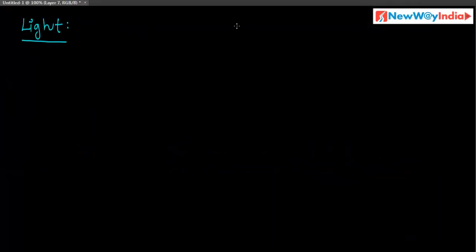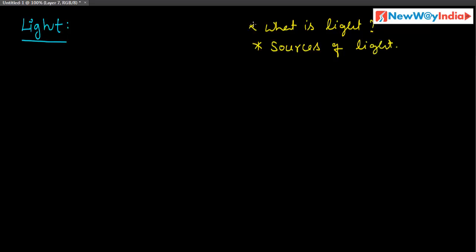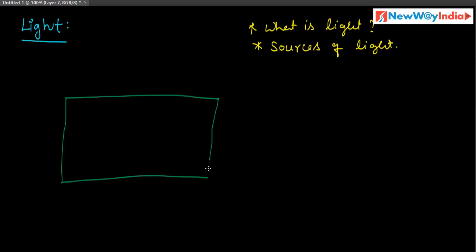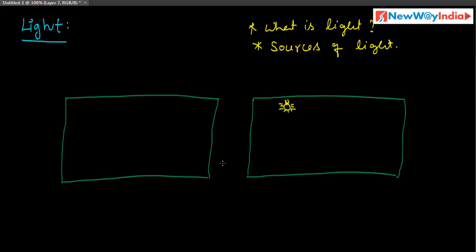In this session we discuss about what is light and sources of light. Let us discuss about what is light. If we entered into a dark room, what do you observe? The objects present there are not visible — you can't see the objects in that room. The same way, if you switch on the bulb, you can see the different objects in that room.